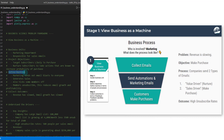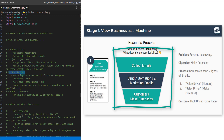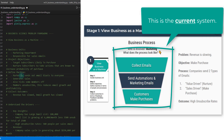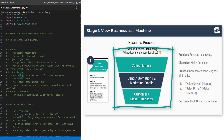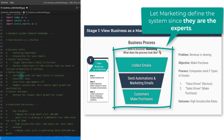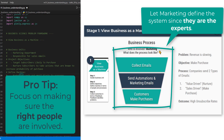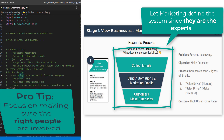Once we have those objectives defined, we define the system that is going to generate — and map out the current system. This isn't the improved system yet, but this is the system that marketing is currently walking through. This is really key when you're talking with these businesses: it's not you who needs to be the expert in their system, but rather it's you who needs to get the right people involved in order to make sure you have the necessary information.